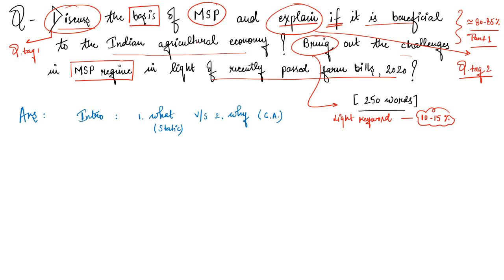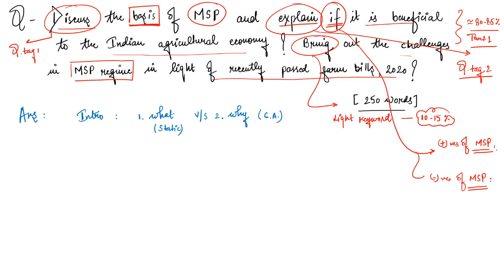The first part asks for the basis and to explain 'if' — meaning we need to cater to both the positives and negatives of MSP for the Indian agricultural economy. The word 'if' signals we must discuss both aspects. The basis part covers how MSP is designed, the criteria for fixing it, and how the entire flow of MSP takes place.